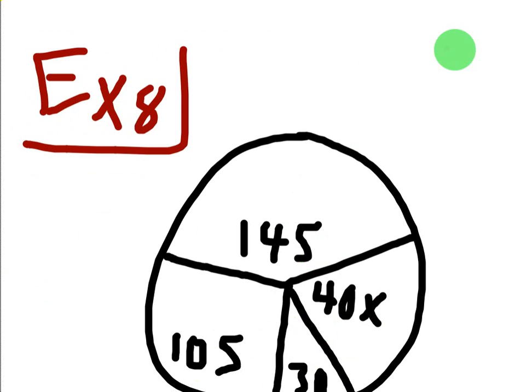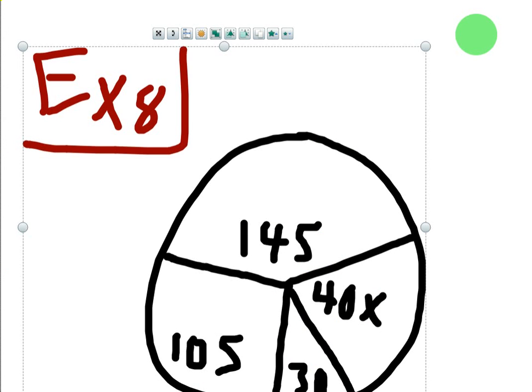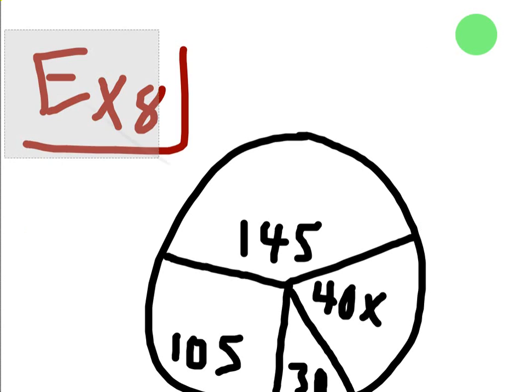And that's because the angles of a circle add up to 360. So when they give you everything, that's all you have to do.